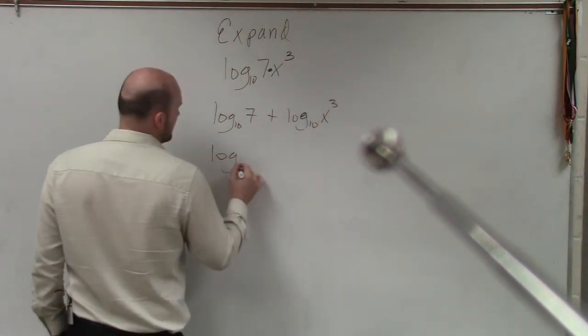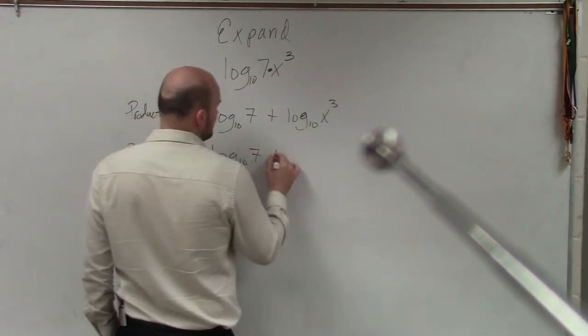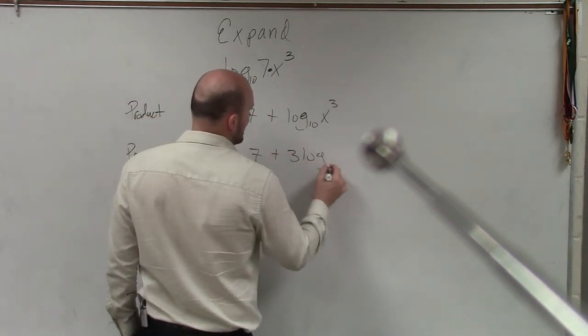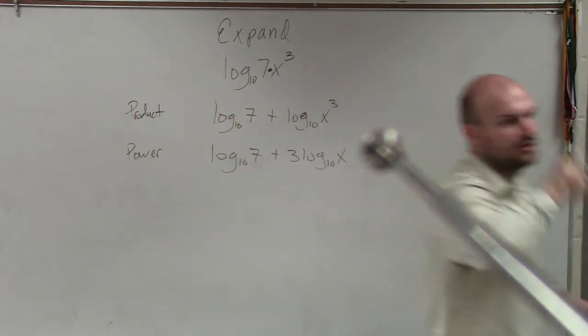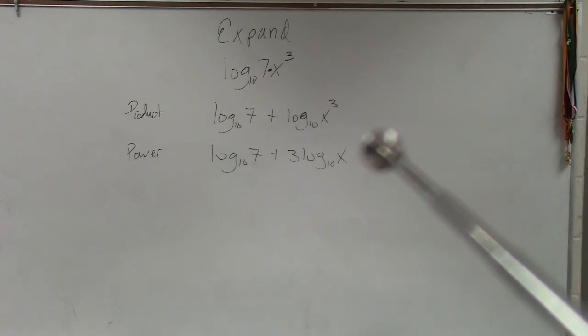And so my final expanded form would be log base 10 of 7 plus 3 times log base 10 of x. If you guys look at your power rule, when you have an exponent, you can bring it down in front, really expanded version.